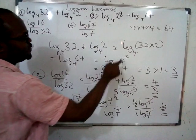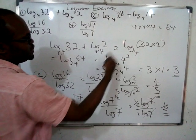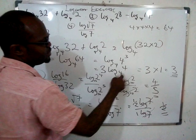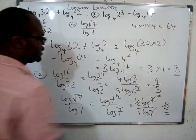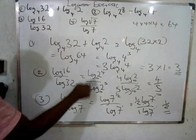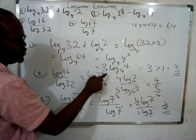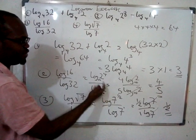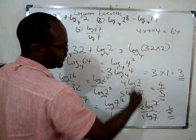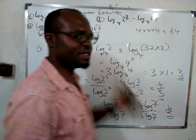64 is the same thing as 4³. Take this one over, you have 3 times 1. Log without a base is simply base 10. So 16 is the same thing as 2⁴, 32 is the same thing as 2⁵. Take this 4 over, take this 5 over. Log2 divided by log2, so you have 4 over 5.